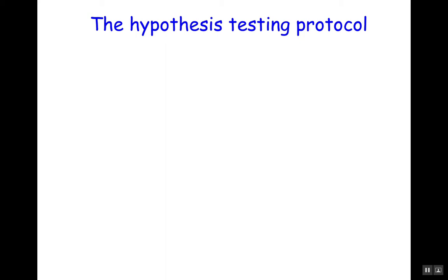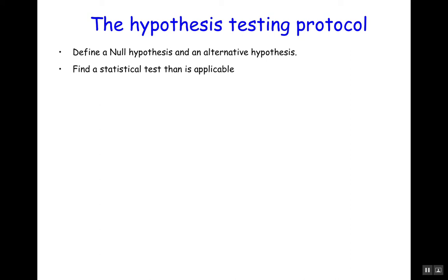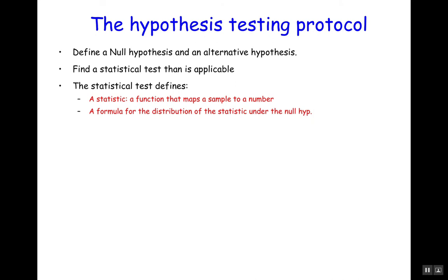So the hypothesis testing protocol goes something like this. You define a null hypothesis and an alternative hypothesis — the null must represent what people believe right now. Then you find a statistical test applicable to the problem. The statistical test defines a statistic, which is a function that maps a sample to a number or random variable with a particular functional form, and a formula for the distribution of the statistic under the null hypothesis.